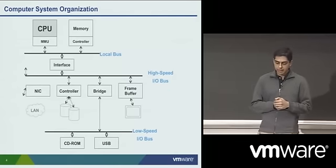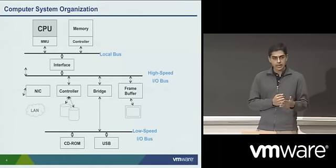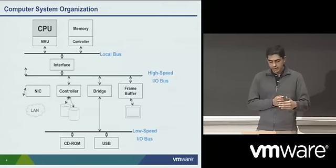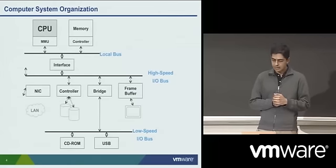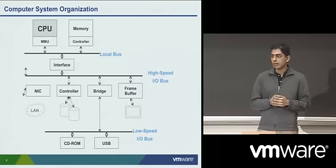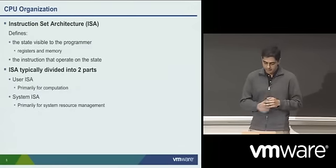As you might remember from your computer architecture class, there's the CPU, the MMU, the memory, the memory controller itself, and all of this communicates over an interface to some high-speed I/O devices and some low-speed I/O devices on separate buses. Most I/O devices and other interesting topics will be covered by my colleague Harvey on Wednesday. Today, most of our focus is going to be on the CPU and the memory components of the architecture.